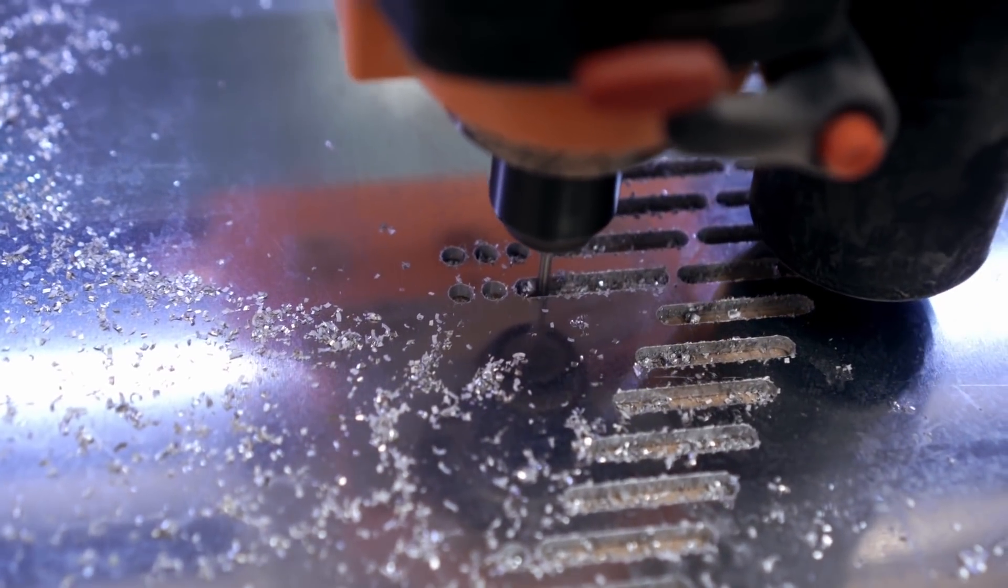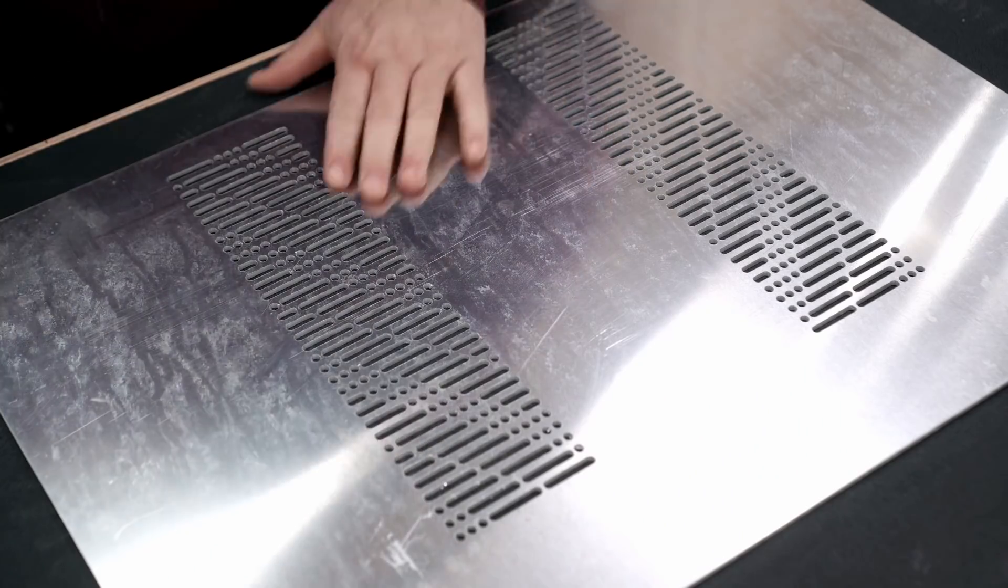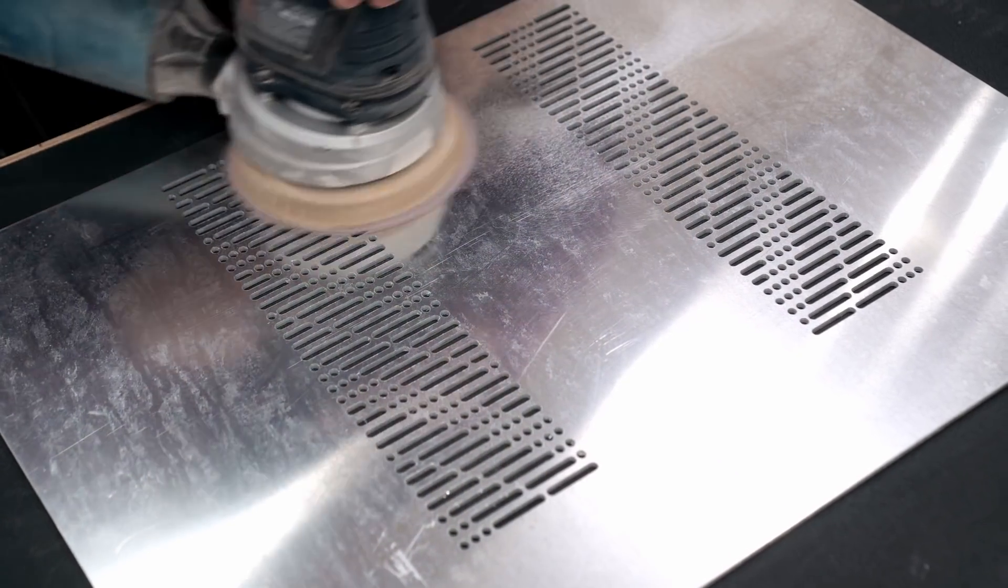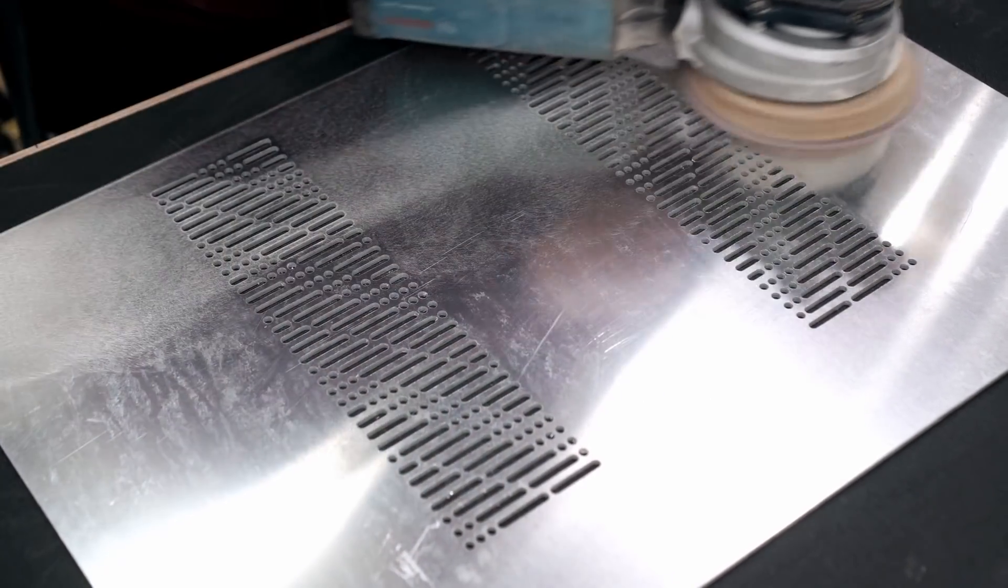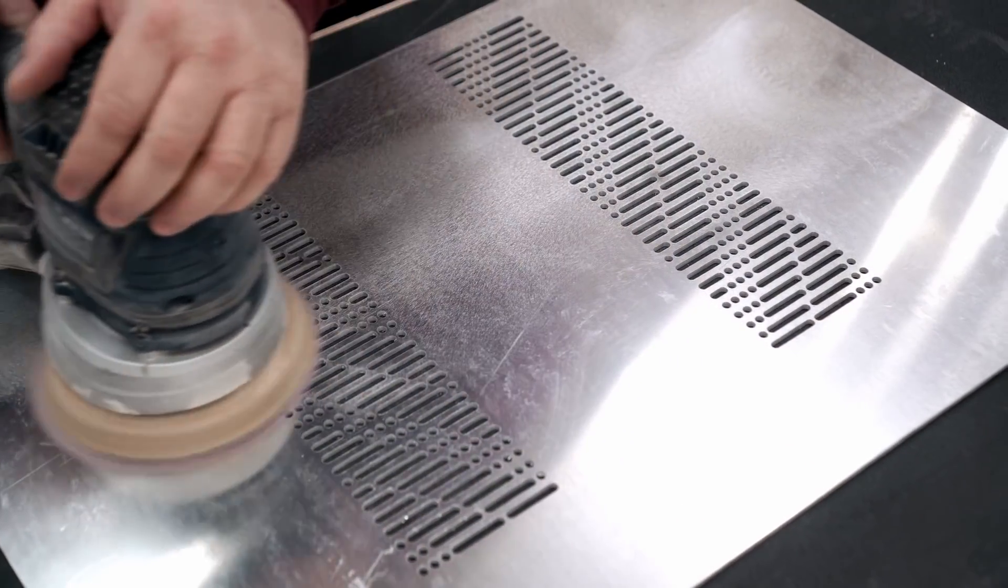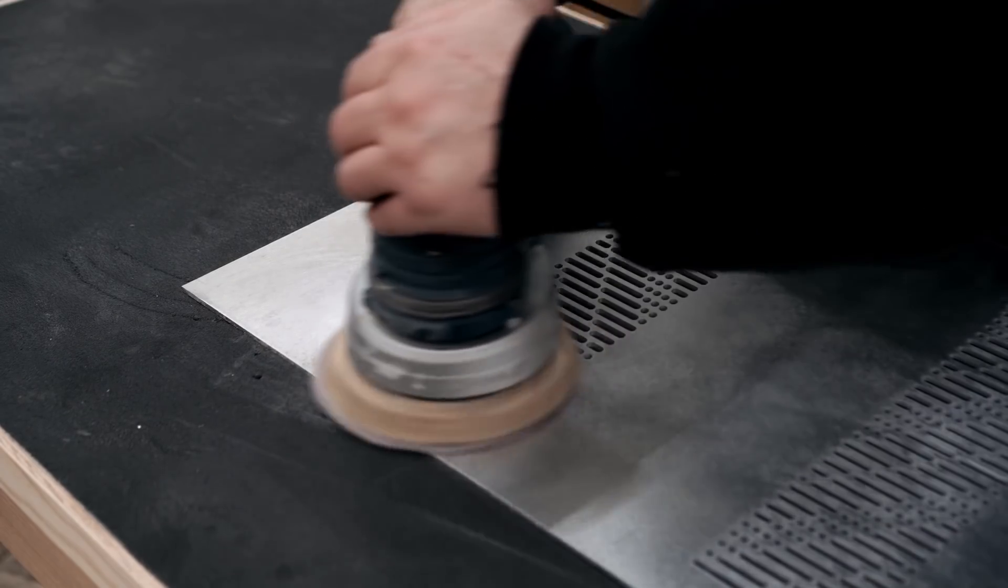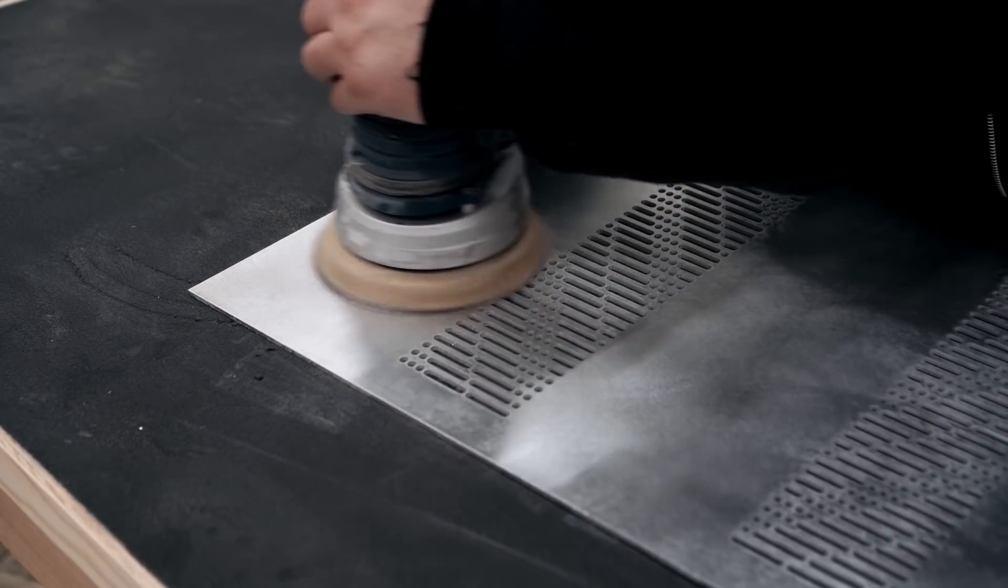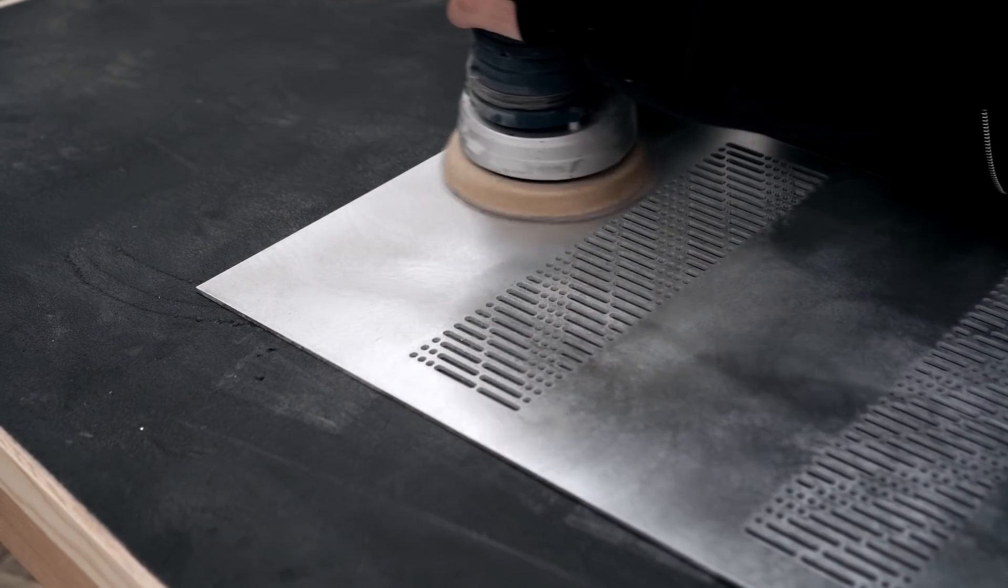This is raw aluminum and it doesn't have any finish like it's not anodized or anything and that's okay if you want to paint it. But if you want to leave it natural you have to do something with it. So I'm taking my random orbit sander here and I'm going over the entire surface to try to give it an even, kind of frosted look.